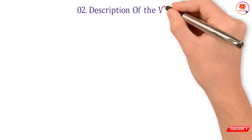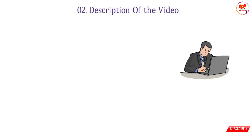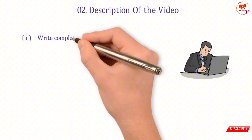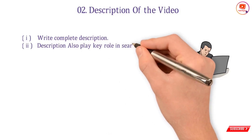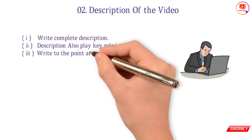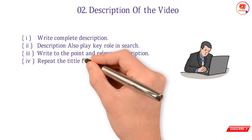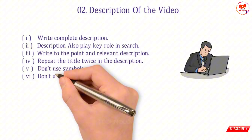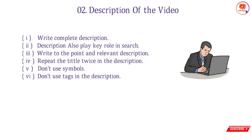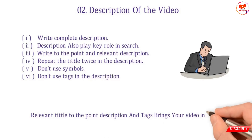Number two — description of the video: study your content very well and do research on your topic. Take your time and then write a proper description. Write a complete description — description also plays a key role in search. Write to the point and relevant descriptions. Repeat the title twice in the description. Don't use symbols in the description, and don't use tags in the description.